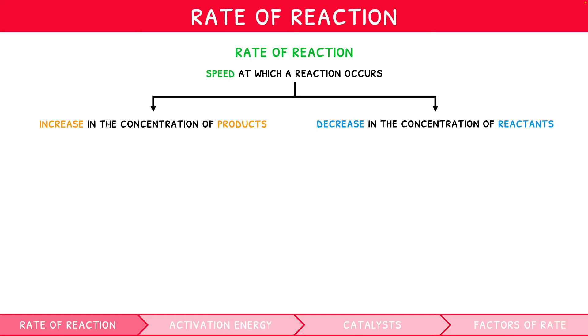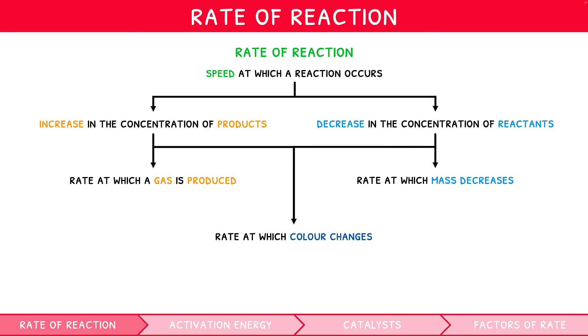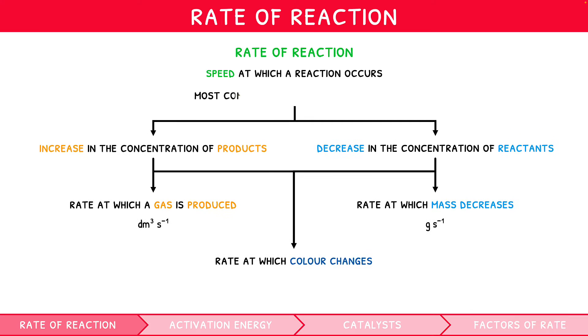Such concentrations are measured practically by recording either the rate at which a gas is produced, or the rate at which the mass of a reaction decreases, or the rate at which the reaction changes color. Rate of reaction can therefore be measured in many units, including decimeters cubed per second and grams per second, but most commonly is measured in mole per decimeter cubed second.